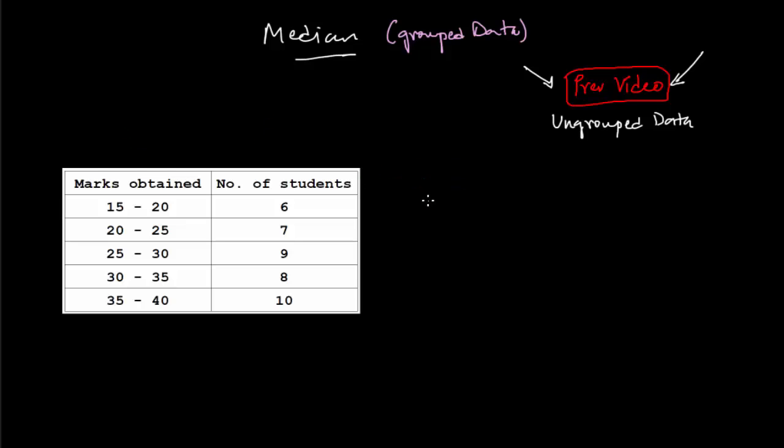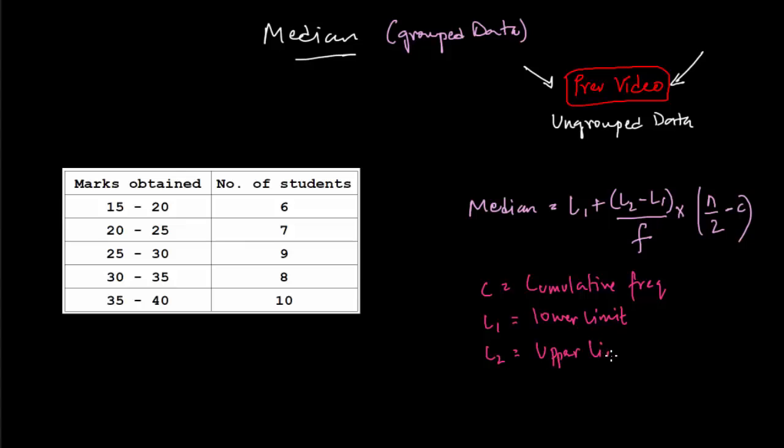Now let me directly give you the formula for the median. For grouped data, the median formula is L1 plus L2 minus L1 divided by F into N by 2 minus C. This looks like a big formula. Let me break it down and make you understand every single element of it. C stands for cumulative frequency. L1 stands for lower limit. L2 stands for upper limit. And I'll tell you about the N by 2 as we go ahead.